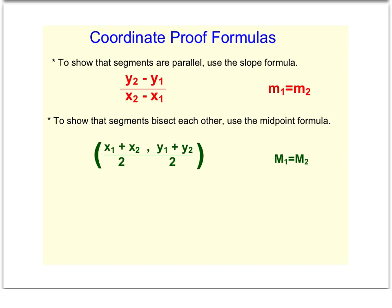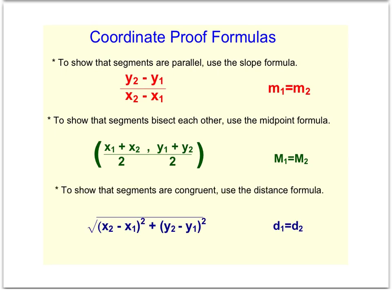The last one you might want to jot down for future use is the distance formula. The distance formula is going to show that segments are congruent. In parallelograms, sometimes we'll need to show that opposite sides are congruent, and that's where the distance formula comes in. You can show that one distance is equal to another distance.